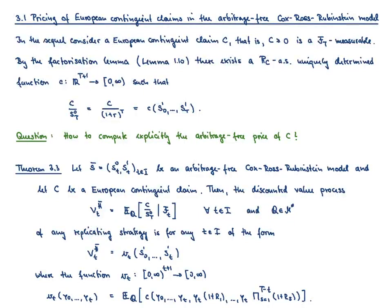Let us now address the question of how to compute arbitrage-free prices for European contingent claims in the Cox-Ross-Rubinstein model. Let me first remind you what a European contingent claim is: it is an F_T measurable random variable c which is non-negative.